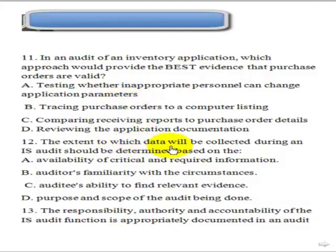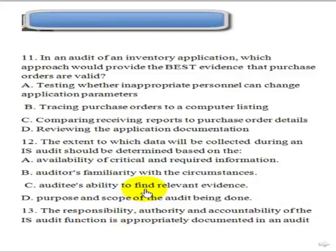Question 12: The extent to which data will be collected during an IS audit should be determined based on: A — availability of critical and required information; B — auditor's familiarity with the circumstances; C — auditor's ability to find relevant evidence; D — purpose and scope of the audit being done. The audit scope will be determined by the purpose and objective of the audit — why are we initiating the audit? So the answer is D.